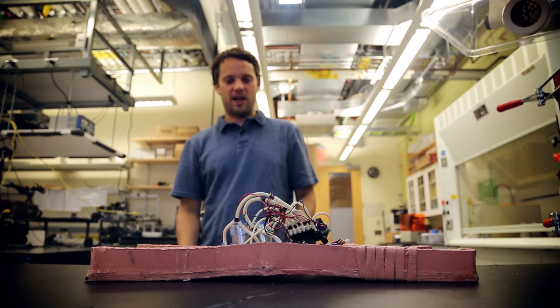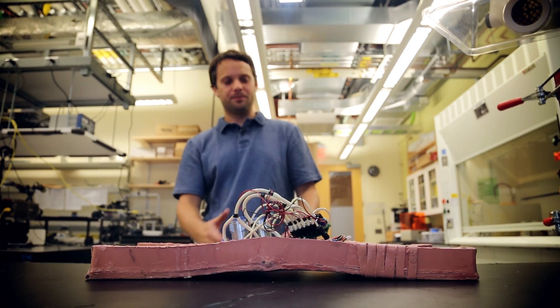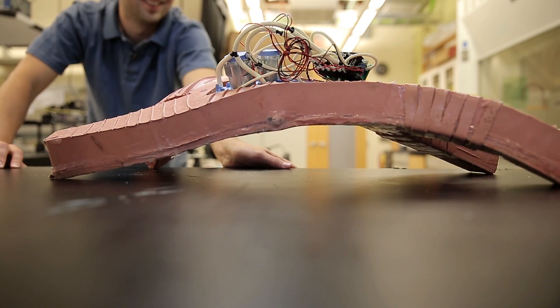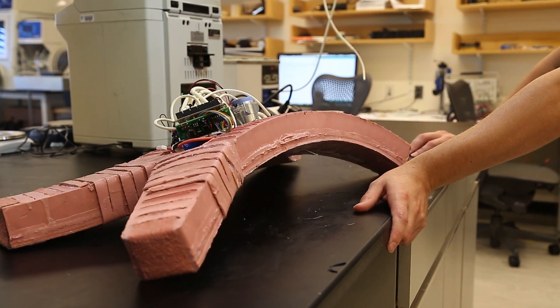So first what's going to happen is it's going to arch its spine to lift the legs into a position where it can actually walk. And then it's going to start actuating the legs sequentially to move.